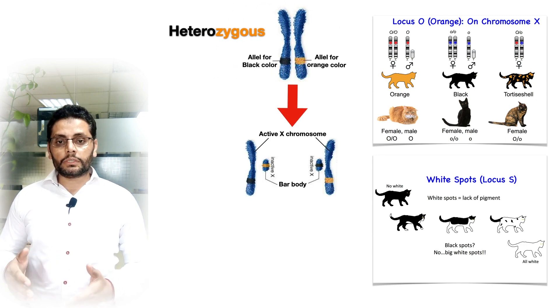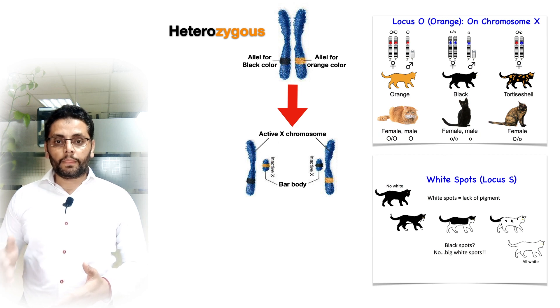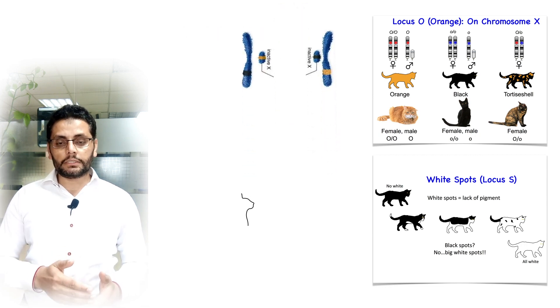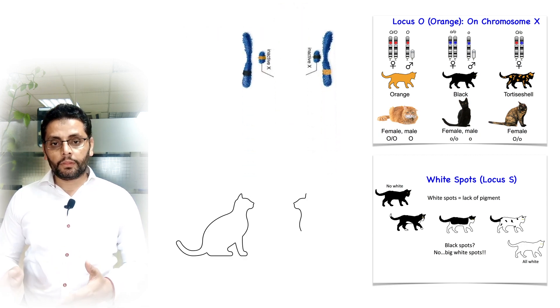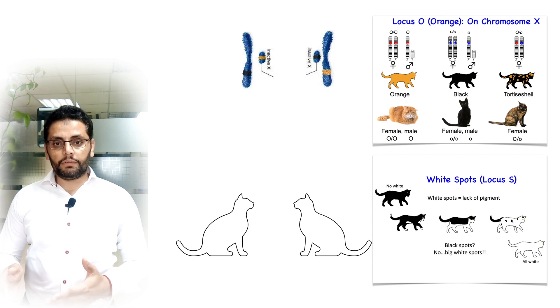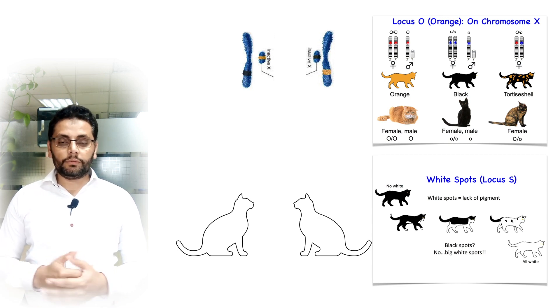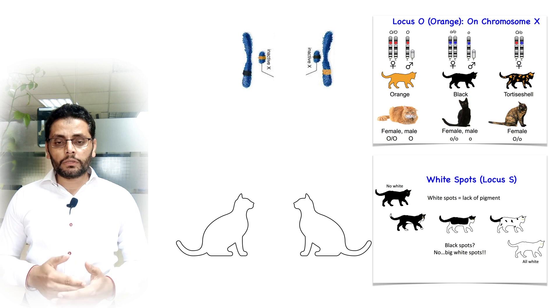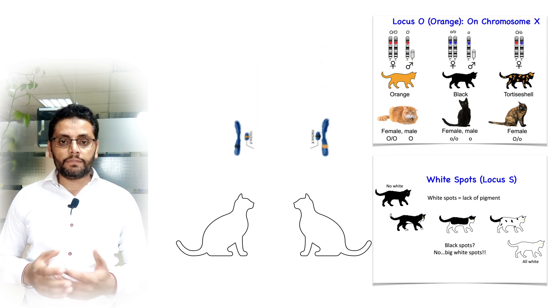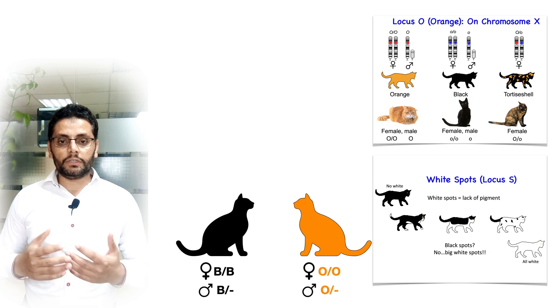Where an X chromosome bearing O is inactivated, the melanocytes are black, and where B is inactivated, the melanocytes are orange. The melanocytes migrate to the epidermis where they multiply and are visible as differentially colored patches.